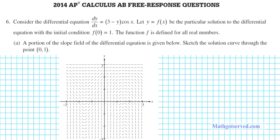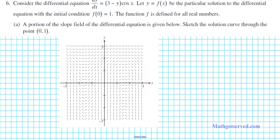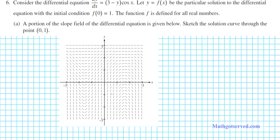Let's take a look at part A for question number 6. Consider the differential equation dy/dx equals 3 minus y cosine x. Let y equals f(x) be the particular solution to the differential equation with the initial condition f(0) equals 1. The function f is defined for all real numbers. Part A: a portion of the slope field is given. Sketch the solution curve through the point (0, 1). Sketching the solution curve is straightforward — all you have to do is follow the pattern of the slope field such that you intersect that point. Step one is to graph the point.